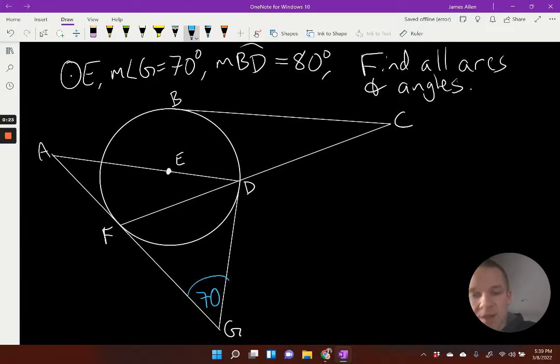So this is 70 degrees right here for that angle. Now BD is 80 degrees. And I'll just jot that down right on the arc there. We're just finding the individual arc. So where can we go from here? Well, lots of places to start.